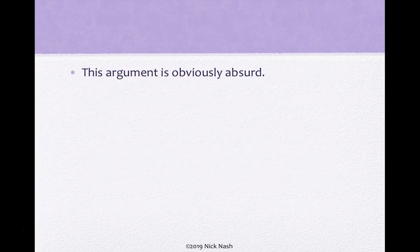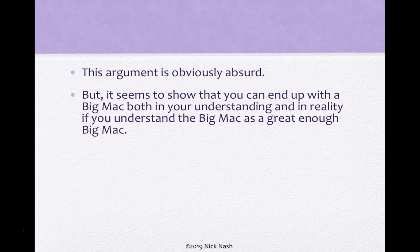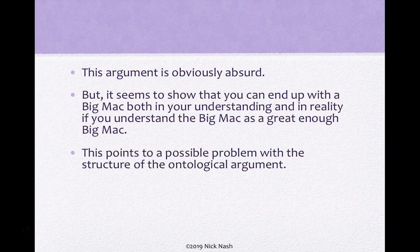This argument is obviously absurd, which means that there must be something wrong with the form of the ontological argument. Nonetheless, it seems to show that you can end up with a Big Mac both in your understanding and in reality if you understand the Big Mac as a great enough Big Mac — namely, a Big Mac than which none greater can be thought. This points to a possible problem with the structure of the ontological argument: it seems to make it able to make any kind of object exist if we define the object as great enough.